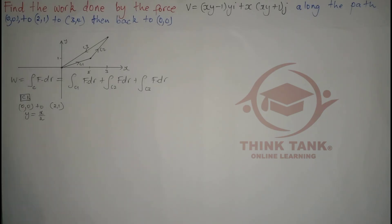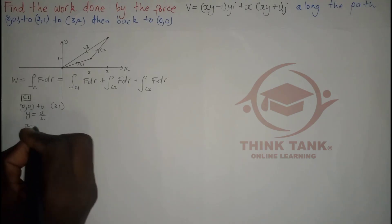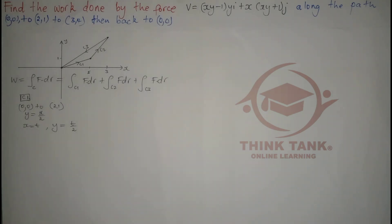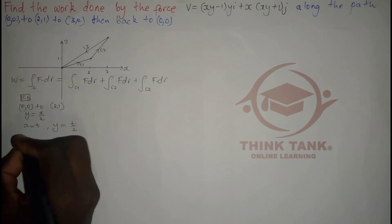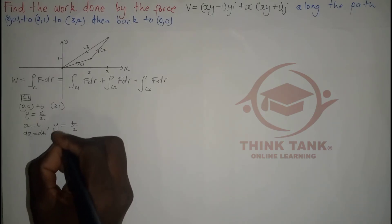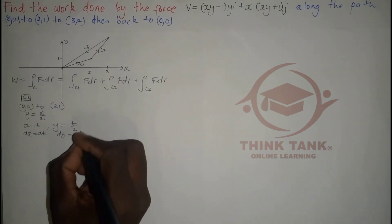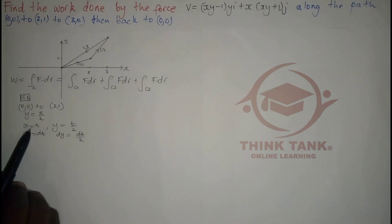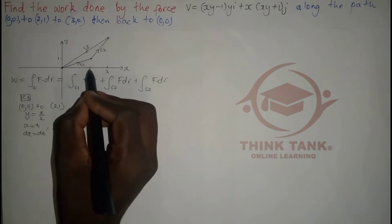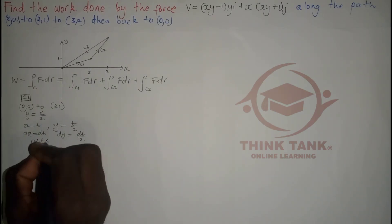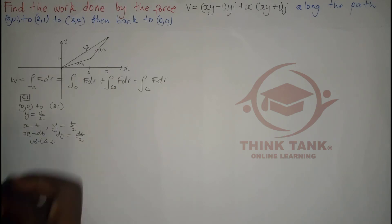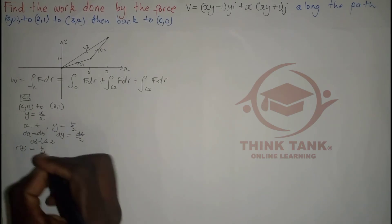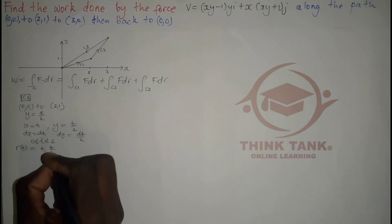Now I'm going to parameterize my variables. I want x = t, which means y = t/2. If I differentiate, dx = dt and dy = dt/2. Since x = t and x goes from 0 to 2, t ranges from 0 to 2. Let us write our parameterized vector equation: r(t) = (t, t/2).